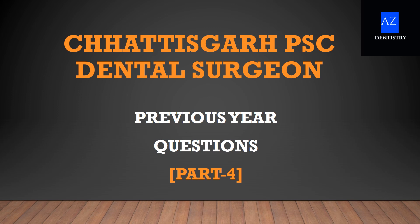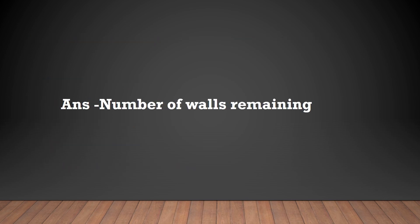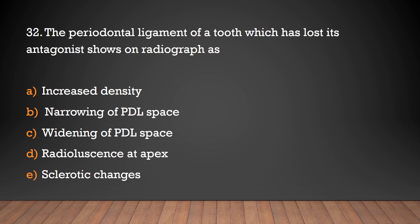Hello friends, welcome to A2Z Industry. On which basis are angular bone defects classified? Number of pockets, depth of pockets, number of walls included, types of pockets, number of walls remaining — the answer is number of walls remaining.